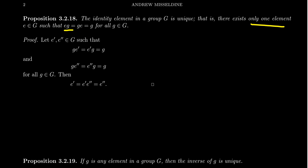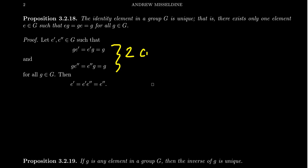The identity element is unique. When one wants to prove that something's unique, typically what you do is you take two elements with that property and argue they actually have to be the same element. There are kind of two ways you could do that. You could do a proof by contradiction: for the sake of contradiction, take elements E prime and E double prime. If they're identities, they have to have the following property: G times E prime has to be G, and also E prime times G has to be G. I do both cases because in a group we don't assume that it's commutative. Then we take another element E double prime, and assume that G times E double prime is equal to G, which is the same thing as E double prime times G. So we take two candidates for the identity.